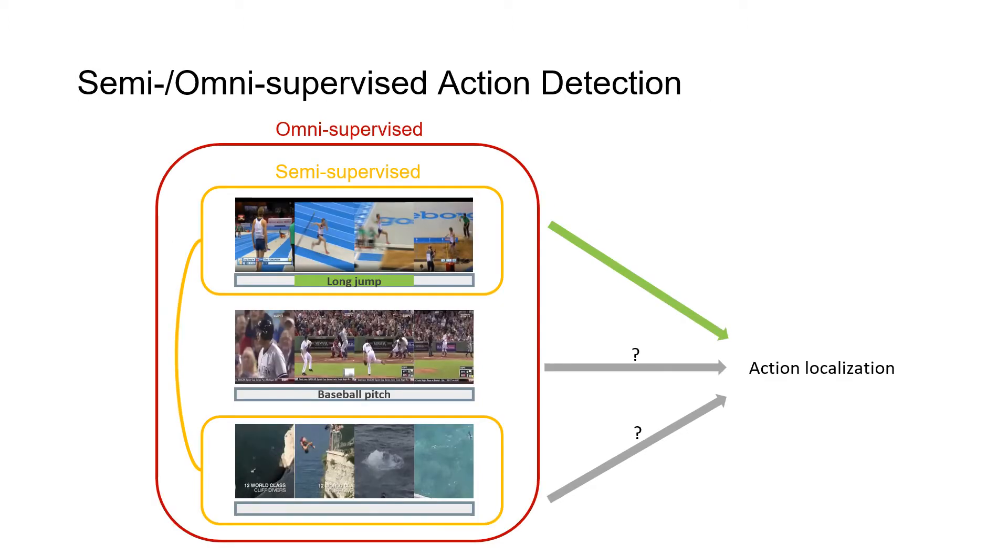To incorporate weakly labeled data and unlabeled videos into our training, we propose two new tasks. First, semi-supervised action detection, which learns from labeled data and unlabeled videos, and also omni-supervised action detection, which learns from all three levels of supervision.